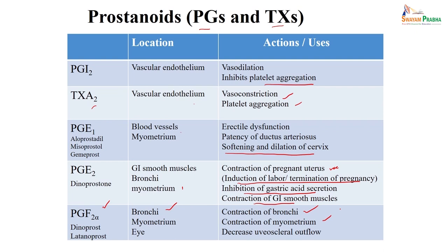You can remember what the prostanoids — prostaglandins and thromboxane — do: what their physiological role is and where they are situated. Prostaglandin release in vascular endothelium causes vasodilatation and inhibition of platelet aggregation. Thromboxane A2 in vascular endothelium causes vasoconstriction and platelet aggregation — the opposite action of prostaglandin. Looking at prostaglandin receptors E1, E2, and F2 alpha, you can think of where they reside, their physiological function, and how they are used in different pathological conditions for treatment.